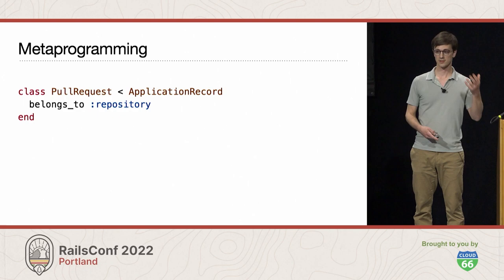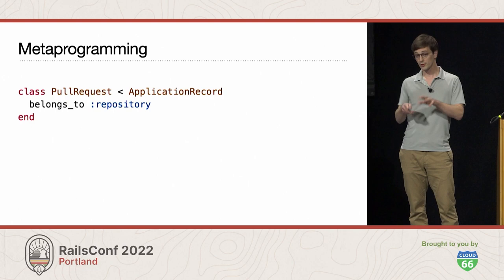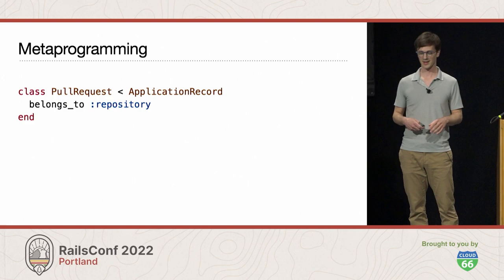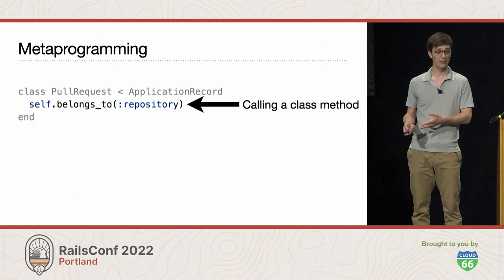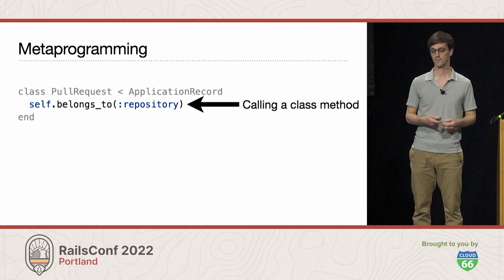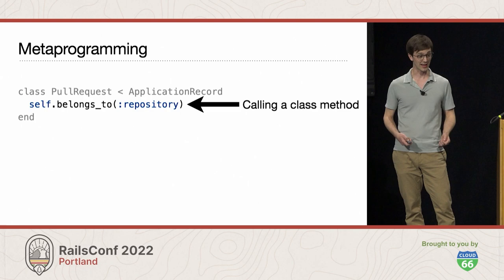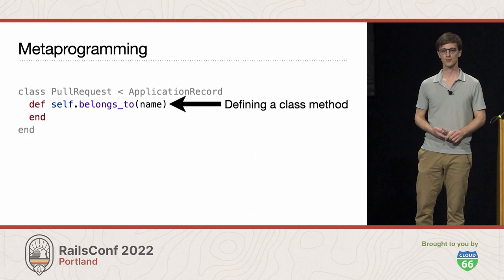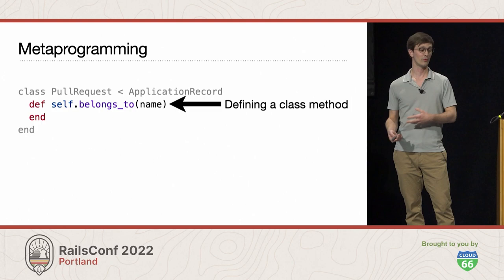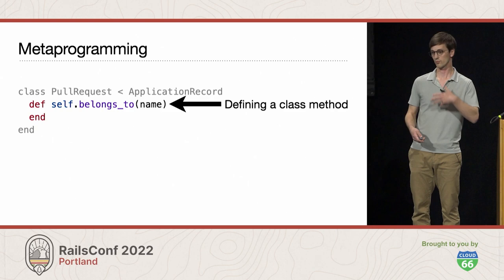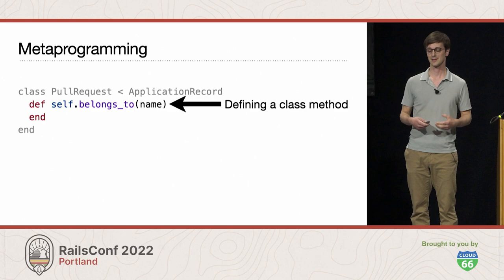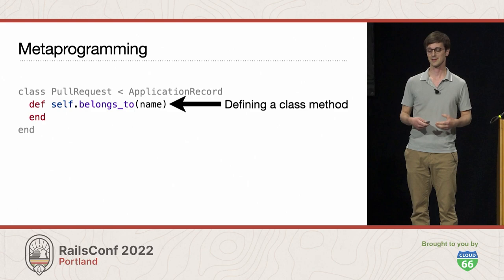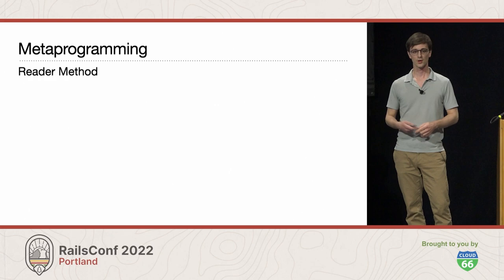For the example here, we're going to have a PullRequest model and define a belongs_to association called repository. The first time I saw this, I had no idea that belongs_to was a method call. I'll rewrite it slightly to make that more explicit — we're calling the belongs_to method on self, where self is the PullRequest class. This is a class method, and it takes an argument of the association name. So we can define a class method — def self.belongs_to — that takes an argument of the association name. That's the easy part. Now the fun part: metaprogramming. When we call this belongs_to method, we want it to define a reader and writer method for our association — a method that writes other methods.